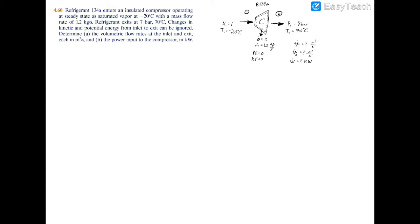We'll start with the mass flow rate formula: ṁ equals velocity times area divided by specific volume. The numerator can be simplified as the volumetric flow rate, so ṁ equals volumetric flow rate divided by specific volume. Rearranging, the volumetric flow rate at the inlet V̇₁ equals the mass flow rate times the specific volume. Plugging in, we have 1.2 kilograms per second...